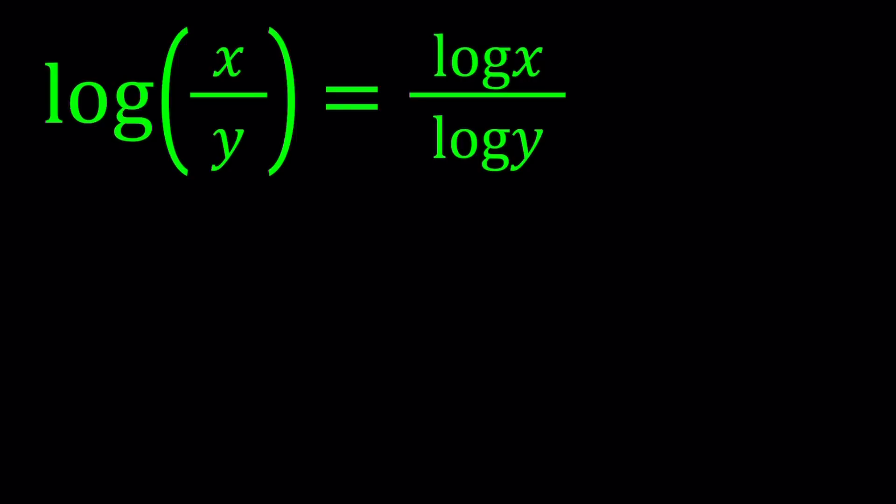But we do have another identity which could take care of the left-hand side, and that is the log of a quotient can be written as the difference of two logs. So we don't have anything for the right-hand side, but we have something for the left-hand side. The left-hand side can be written as log x minus log y, and now we're going to set it equal to the right-hand side.